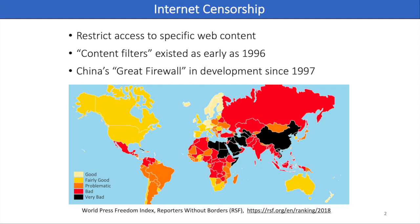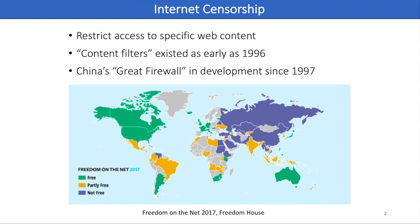Internet censorship, which restricts access to specific web content, has been happening since 1996. Since then, it has become more and more common over the world. Reporters Without Borders issued an annual report on freedom of the press. In this map, the darker the color of the countries, the lower the level of freedom available to journalists. There is another map issued by Freedom House on Freedom on the Net, and we can see countries that are not free or partially free. From these reports, we can see that governments frequently control what information can be accessed by the citizens.